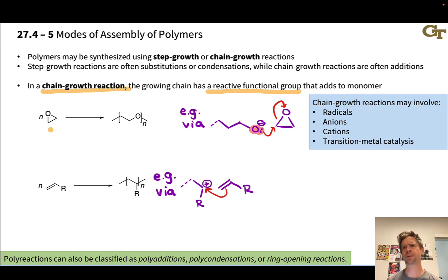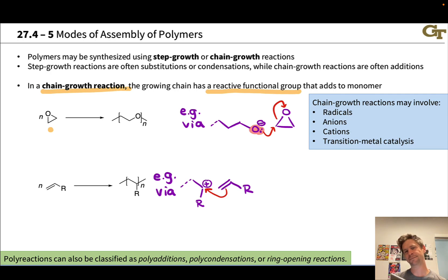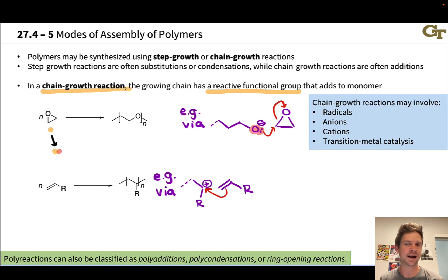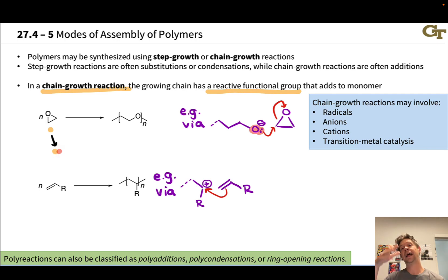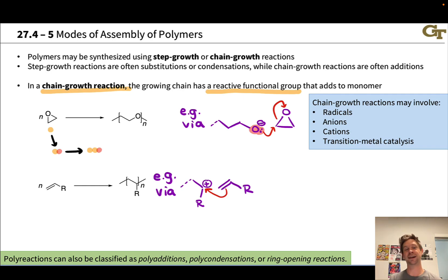Let's think about chain growth from the perspective of the monomer and growing polymer chain. The beginning of any chain growth polymerization is always some kind of initiation event that creates the first reactive moiety. For example, hydroxide adds to the epoxide and creates the first O⁻, represented here in red. That O⁻ adds to another equivalent of epoxide, creating a new O⁻ and lengthening the polymer chain by one unit — one reaction event, one unit added.